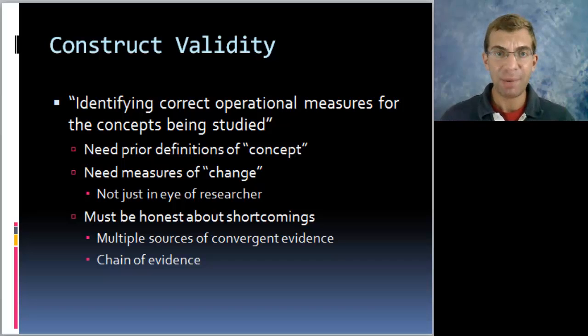You should be honest about the shortcomings of your evidence. This goes back to external validity of how well you can generalize your results. What's important is to use multiple sources of evidence as well as a chain of evidence, it's more convincing.